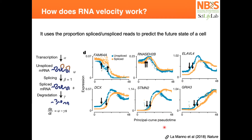So this is just an idea to keep in mind. Basically, velocity is just trying to find where the spliced version of my unspliced cell will be, so I can find a trajectory — like an arrow that points to that direction.